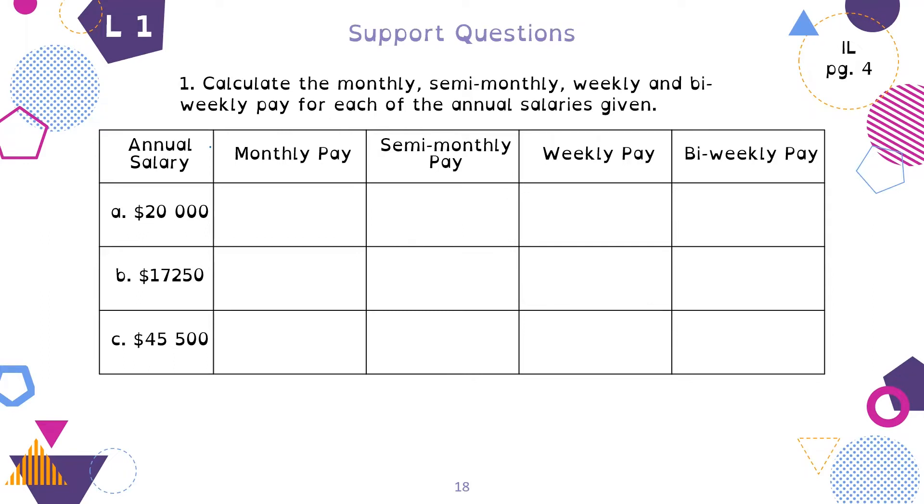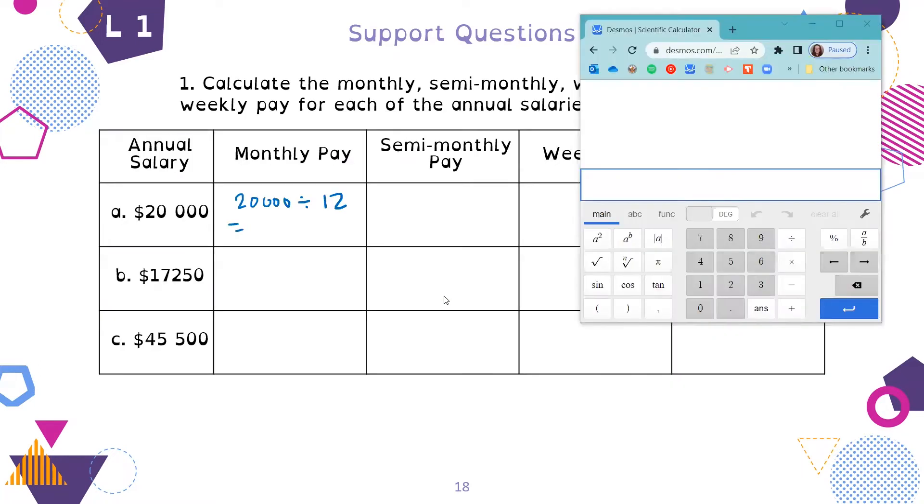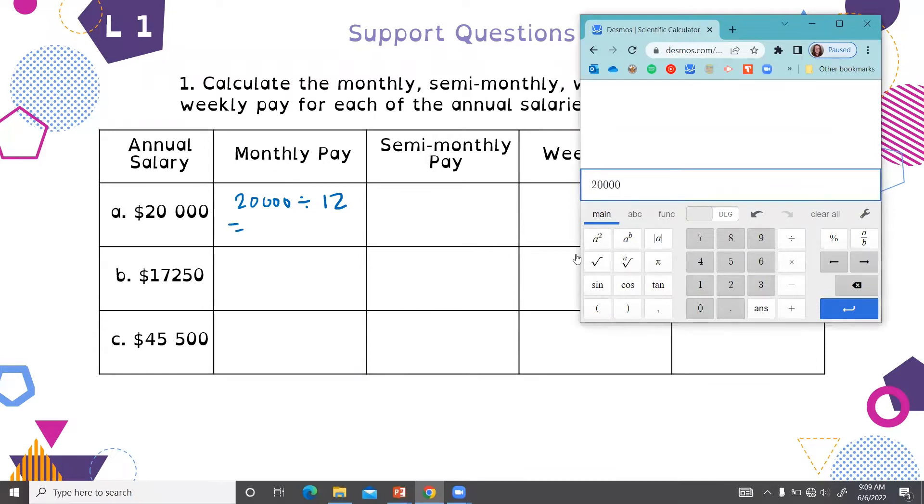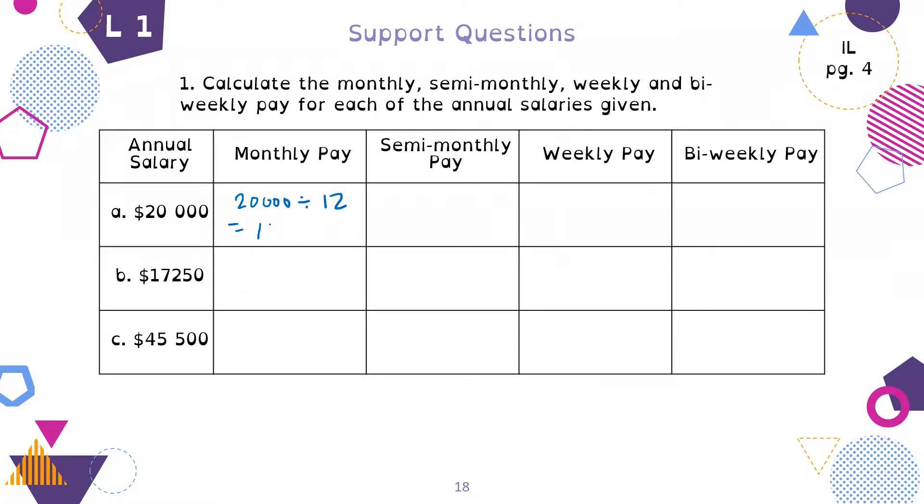We're going to do the support questions. Support question number one is on page four. Calculate the monthly, semi-monthly, weekly, and bi-weekly pay for each of the annual salaries given. We'll just do one of these because the process is exactly the same. Let's do A, the annual salary is $20,000. So the monthly pay is $20,000 divided by 12.